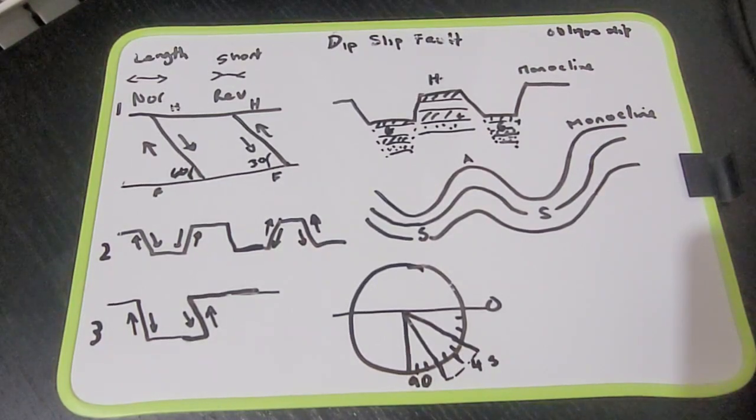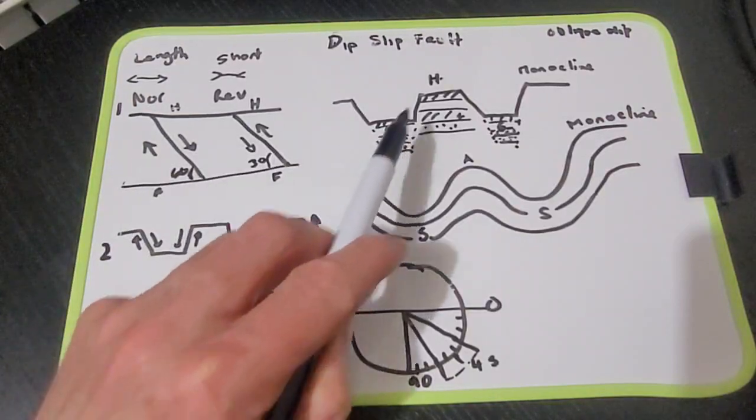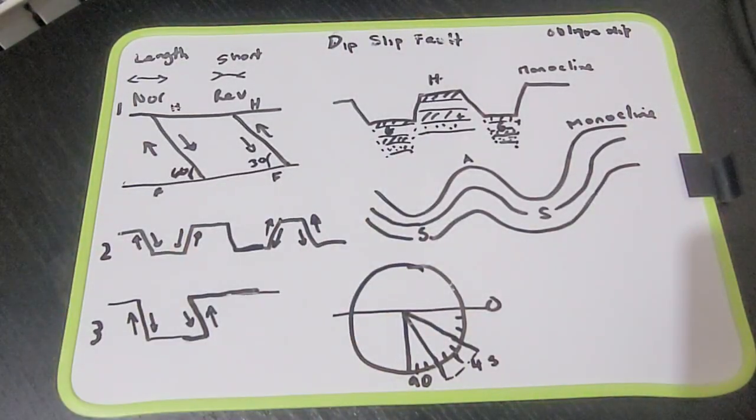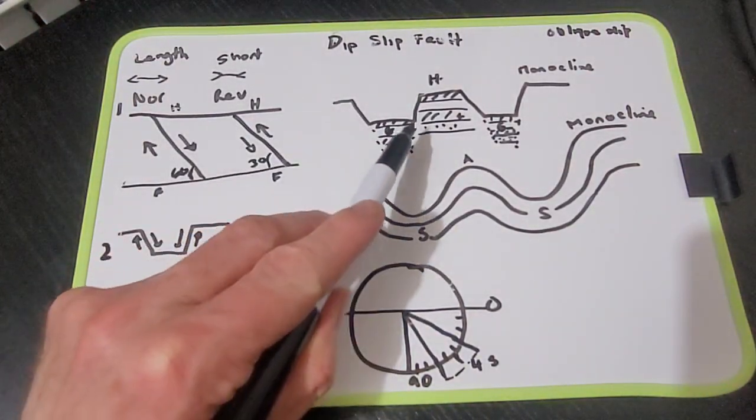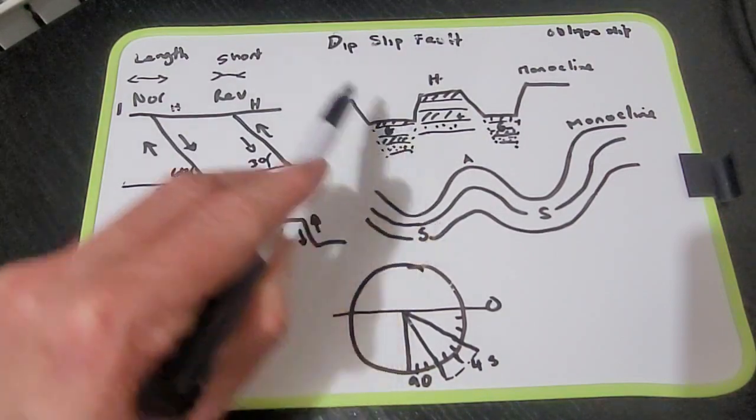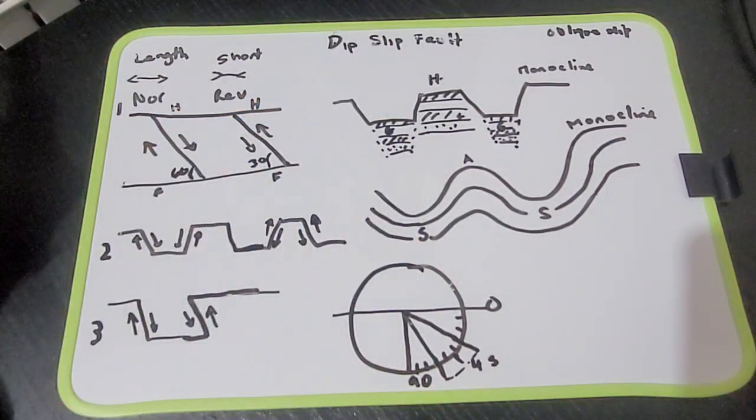Hello and welcome back to geology. In today's video it's going to be a short video just talking about grubens and horst. Now a certain type of geologic formation that forms with the strike dip fault.